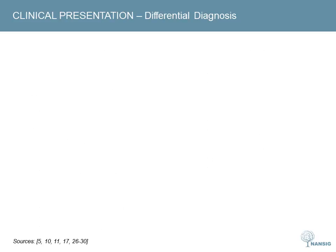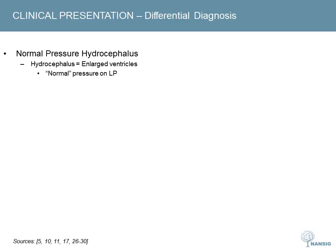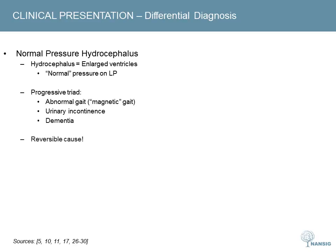Normal pressure hydrocephalus involves enlarged ventricles secondary to impaired drainage of CSF, but CSF pressure is within the normal range when measured on lumbar puncture. Although the pressure is normal, it is sufficient to cause damage to surrounding tissue. The condition classically presents with a triad of abnormal gait, urinary incontinence, and dementia. This is a potentially reversible cause of dementia if treated early, and patients should be referred for workup for shunt surgery.